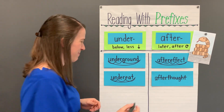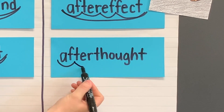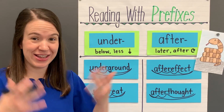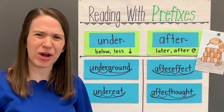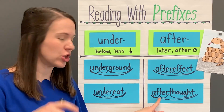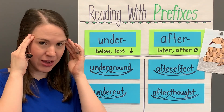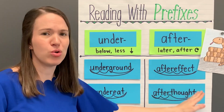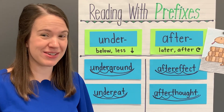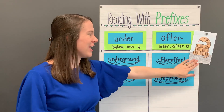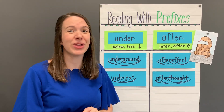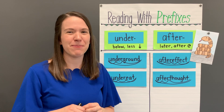Let's read our last word together. Read with me. Afterthought. This word is afterthought. What does afterthought mean? The after prefix means later or after, and thoughts are the things that we think. So an afterthought is something you think at a later time, maybe after something has already happened. As an afterthought, I should tell you that even though northern water snakes are not venomous, they do try to bite sometimes if you get too close, so it's good to give them space.